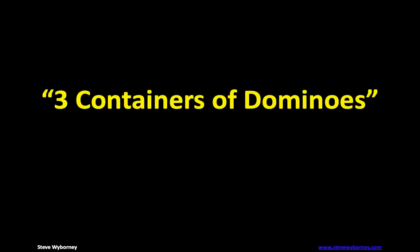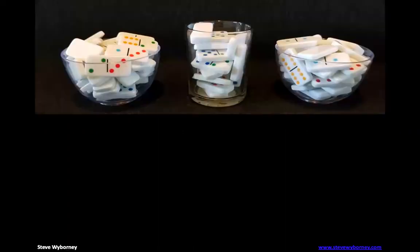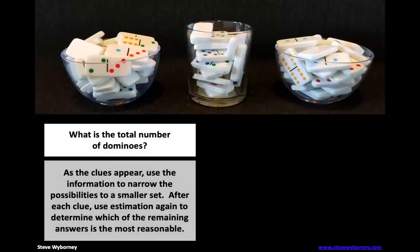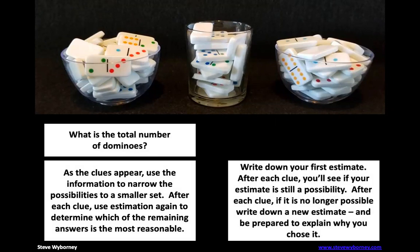So this one is called Three Containers of Dominoes. This can be a little different than some of the others we've done. As you can see, there's two bowls and one glass with dominoes. What I want you to do is take a look at all three and estimate how many total dominoes are in the three containers combined. Go ahead, take a look, and write down or tell somebody what your estimate is.